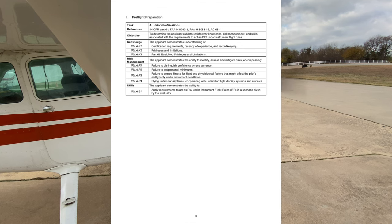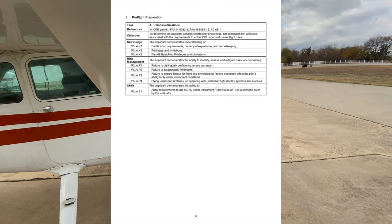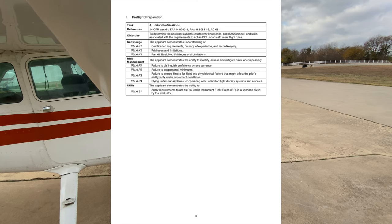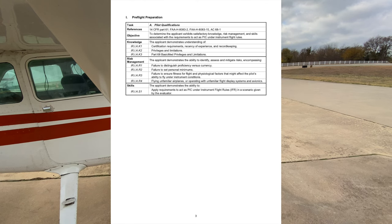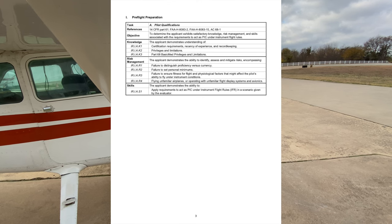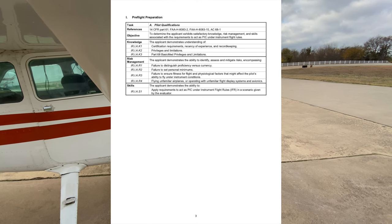Your DPE is probably going to ask you to show that you're eligible for this checkride. The hours consist of 50 hours of cross-country as PIC, 40 hours of simulated or actual instrument time, of which 15 hours must be with an instructor, a cross-country flight of 250 nautical miles or more with an instructor, and three different kinds of approaches. In order to apply for an instrument rating, you must already have your private pilot certificate, or be concurrently applying for one.